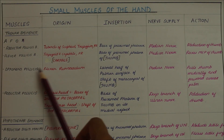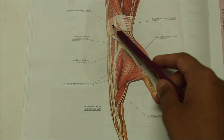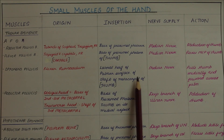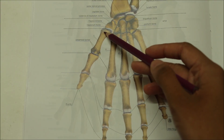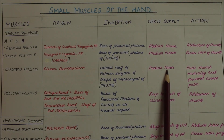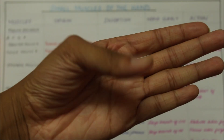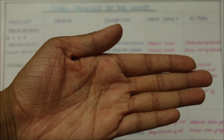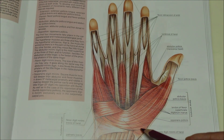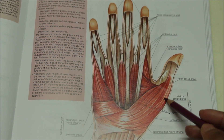Next we have the opponens pollicis. It originates from the flexor retinaculum. It inserts into the lateral half of the palmar surface of the shaft of the metacarpal of the thumb. It is supplied by the median nerve, and its action is that it pulls the thumb medially and forward across the palm.